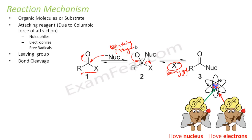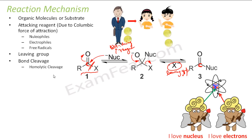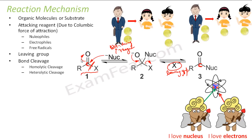We also have bond cleavage. If you see here, a bond is broken — the C–X bond is broken and the C–Nu bond is formed. We will study more about the bond cleavage. There are two different types of bond cleavage: homolytic cleavage and heterolytic cleavage.